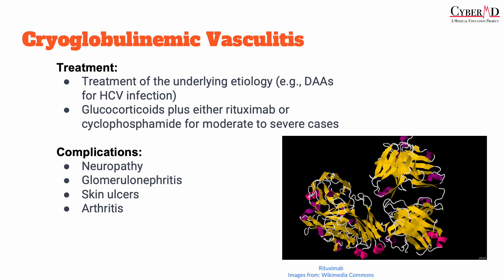Treatment depends on disease severity. Very mild cases can be treated with symptomatic treatment such as NSAIDs. Moderate or severe cases may require glucocorticoids in combination with either cyclophosphamide or rituximab. Importantly, you should treat the underlying etiology, which is most likely the hepatitis C virus infection. Complications can be severe and life-threatening, including renal failure, skin necrosis, or peripheral neuropathy, so close monitoring and prompt treatment are important.